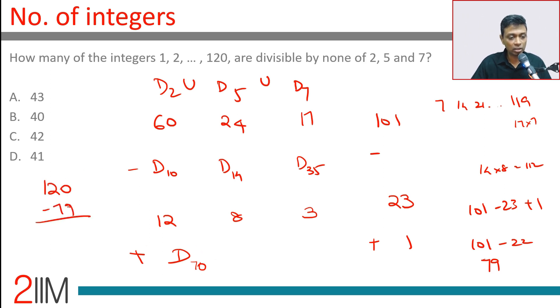From this we subtract 79, we get 41 numbers that are divisible by none of 2, 5, and 7.